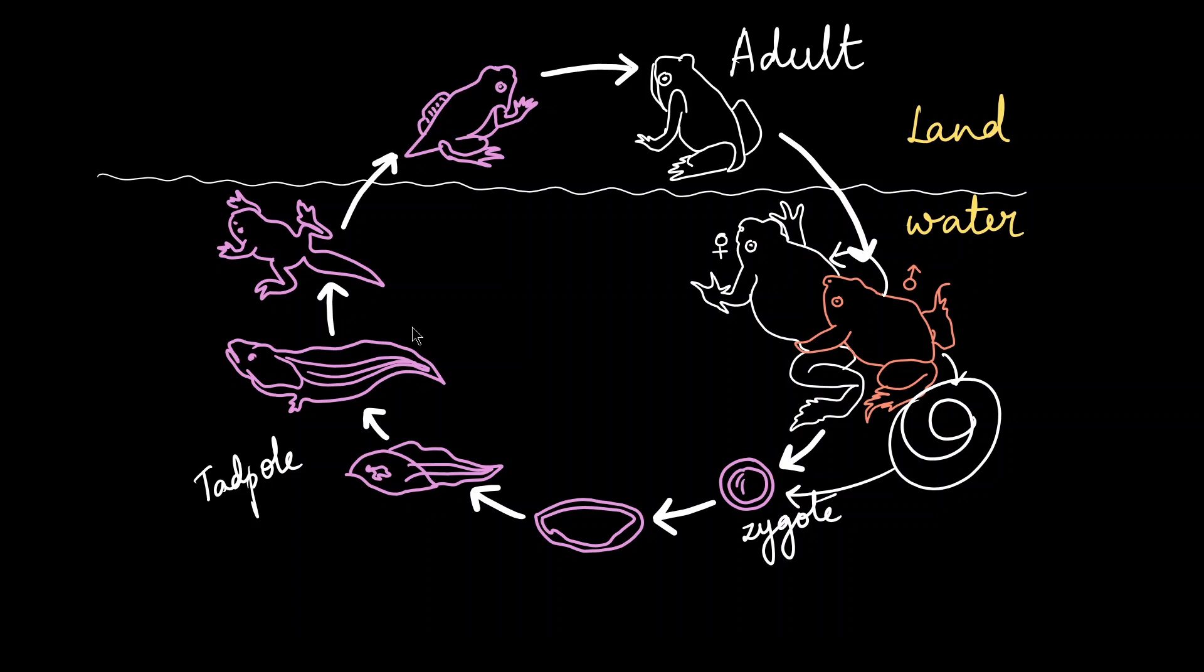And slowly they start developing the body of an adult frog and finally when they adapt themselves to the land they lose the tail. You can see that the development happens in a stage-wise manner and this kind of development in animals is called metamorphosis.